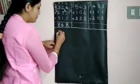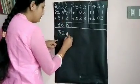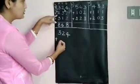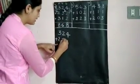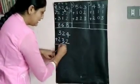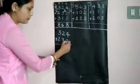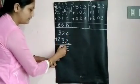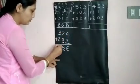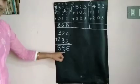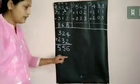That is, so first you have 324 plus 232. Add these 2 numbers. So 4 plus 2, 6. 2 plus 3, 5. 3 plus 2, 5. You have got 556 as answer for 2 numbers.